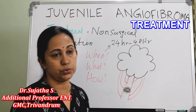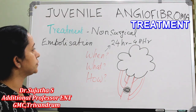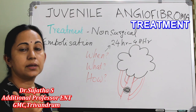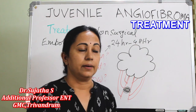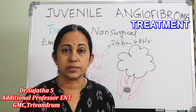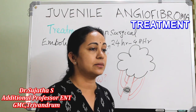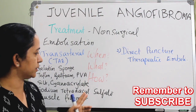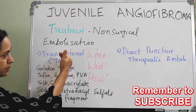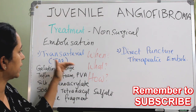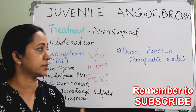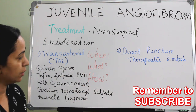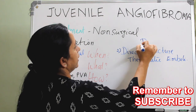What are the materials used? We have two types of embolization: one is the conventional trans-arterial embolization, and another one is direct-puncture therapeutic embolization. These are the two methods — the answer to how. One is conventional trans-arterial embolization and another is direct-puncture therapeutic embolization, commonly known as DPTE.